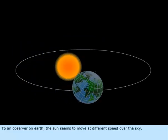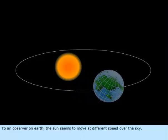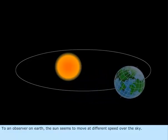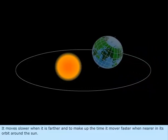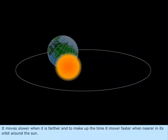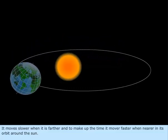To an observer on Earth, the Sun seems to move at different speed over the sky. It moves slower when it is farther, and to make up the time, it moves faster when nearer in its orbit around the Sun.